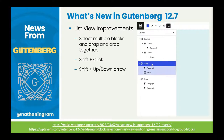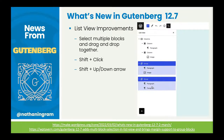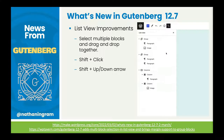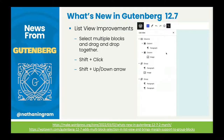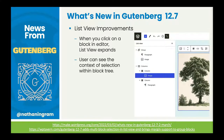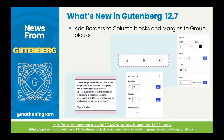There are also list view improvements in Gutenberg 12.7. The list view is one of the best features of the block editor. You can now multi-drag blocks and groups — a shift-click lets you select multiple blocks or groups and drag them to a different spot on the page. Also, when you click a block in the editor, the list view opens and shows you exactly where you are in the hierarchy. You can also now add borders to column blocks in Gutenberg 12.7.